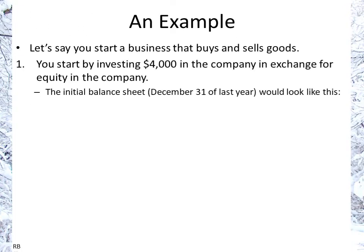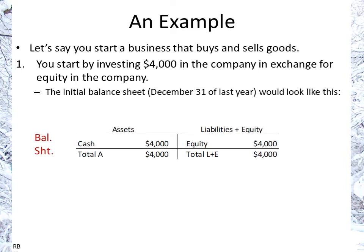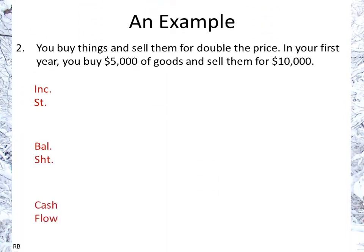Let's start with a simple business. You start by investing $4,000 in a company in exchange for equity in that company. So the initial balance sheet would just be assets on one side — which is cash — and liabilities and equity. There's no liability, there's just equity: $4,000. Now let's say you buy and sell things for double the price. In the first year you buy $5,000 worth of goods and you sell them for $10,000. We're making a very simple income statement — no taxes or anything of that sort. So we have $10,000 of revenues and $5,000 cost of goods sold.